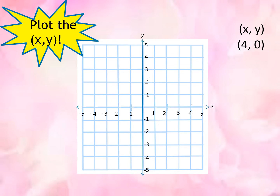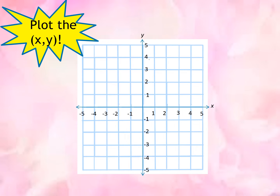Next, the point (4, 0): x is equal to 4 and y is equal to 0, so therefore it lies along the x-axis. Now let us have (0, negative 2): x is equal to 0, y is equal to negative 2, so this point lies along the y-axis.